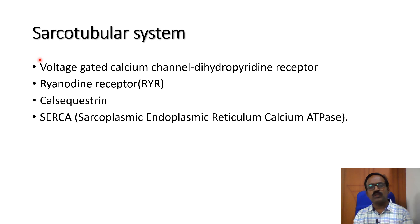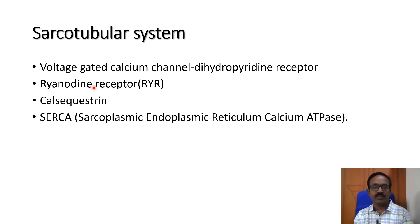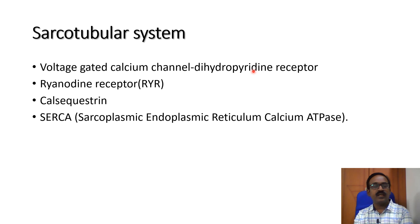The sarcotubular system has a voltage-gated calcium channel called the dihydropyridine receptor, which is connected with the ryanodine receptors. Dihydropyridine is the drug that plugs that receptor, so it is called the dihydropyridine receptor. Ryanodine is a plant alkaloid that plugs that receptor, so it is called the ryanodine receptor.